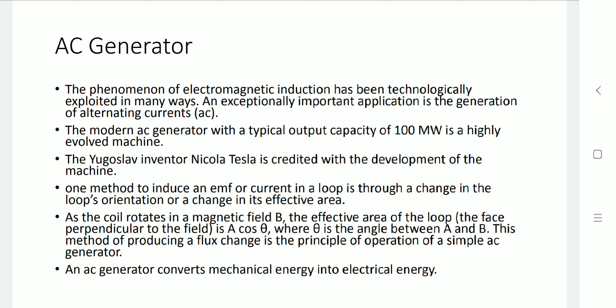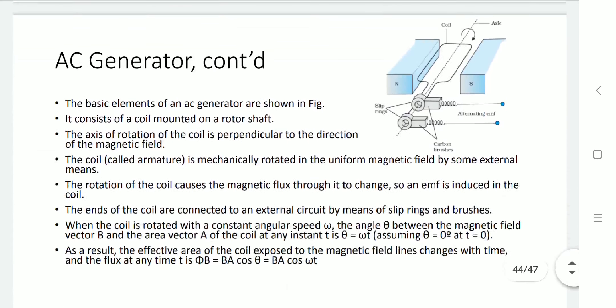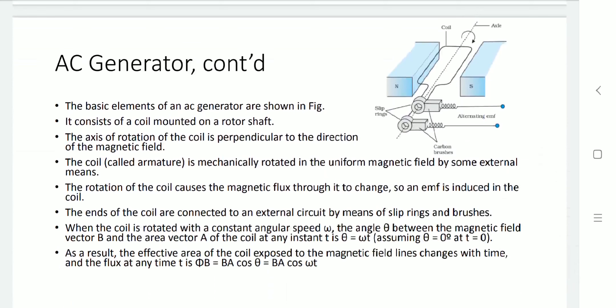The basic fundamental AC generator can be discussed based on the given diagram. The basic elements are defined: a coil is mounted over the rotor shaft. The axis of rotation of the coil is perpendicular to the strong magnetic field between N and S poles. The coil is mechanically rotated in the uniform magnetic field by external means. The rotation of the coil causes the magnetic flux through it to change, and as the magnetic flux changes, an EMF is produced.